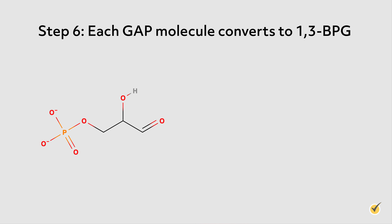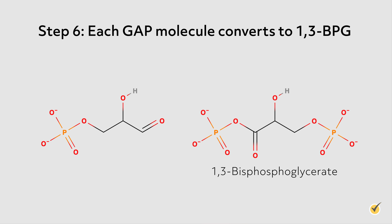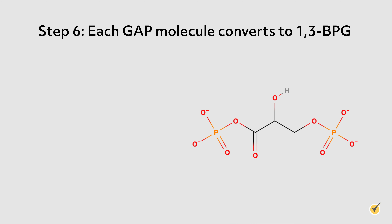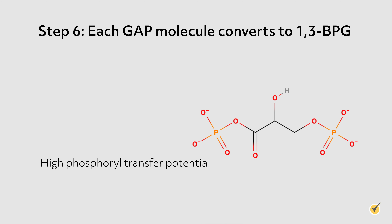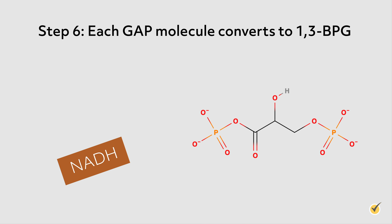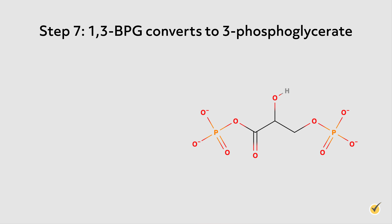Let's jump back in with step six. Step six converts each GAP molecule into 1,3-bisphosphoglycerate. The reason we generated 1,3-bisphosphoglycerate is because it has high phosphoryl transfer potential in the newly generated phosphate group — if we break this bond, it will release energy. In addition to 1,3-bisphosphoglycerate, the reaction also produces one molecule of NADH, which is a high-energy electron carrier that can be used to generate ATP later in cellular respiration.